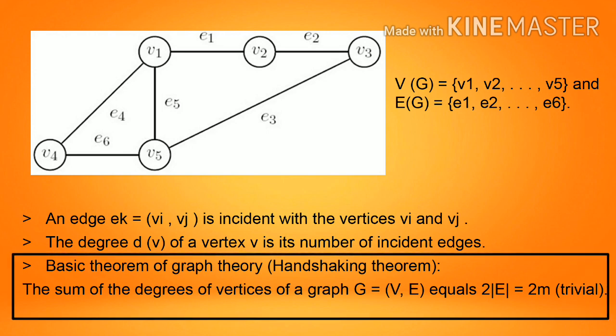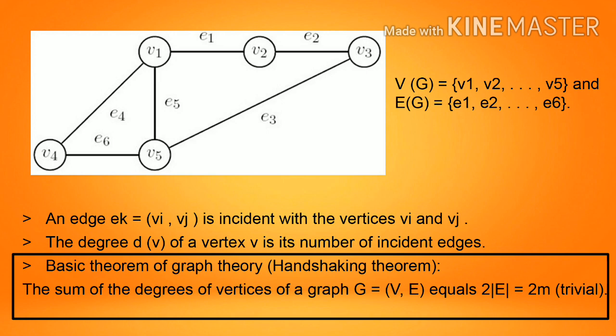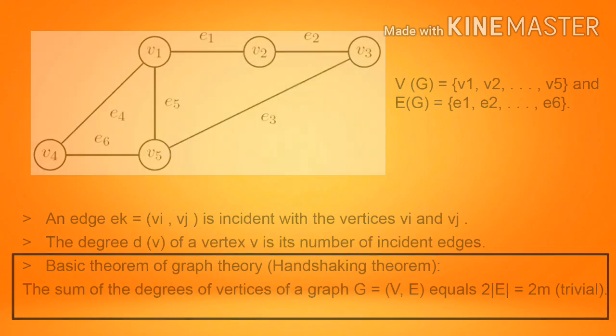Basic theorem of graph theory — it is called the Handshaking Theorem. The sum of the degrees of vertices of a graph G equals 2|E|, which is equal to 2M. This is the trivial case.